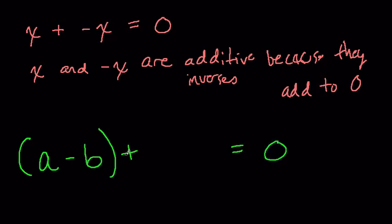Well, we want to add opposites, right? So the additive inverse of a is negative a, and the additive inverse of minus b is plus b. And that's it. We've got the additive inverse.